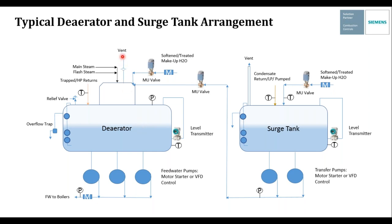As a result, deaerators are typically ASME Section 8 vessels, normally registered with the National Board of Pressure Vessel Inspectors. There's a vent section with an orifice or throttle valve to ensure sufficient venting to properly remove dissolved gases — primarily oxygen and carbon dioxide. High pressure trap returns off of drip legs from the main steam header are also a good place to tie into the DA to eliminate losses due to flash steam. An overflow trap keeps steam in the deaerator and drains water to a safe location. High, low, and low-low level switches protect the pumps.